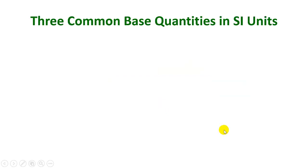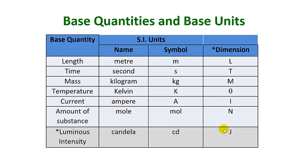There are three common base quantities in the International System of Units, also known as SI units. They are mass, time, and length. In all, there are actually seven base quantities with seven associated base units.